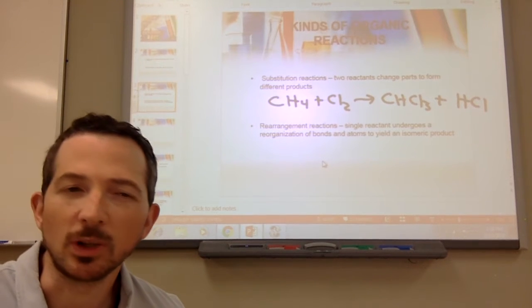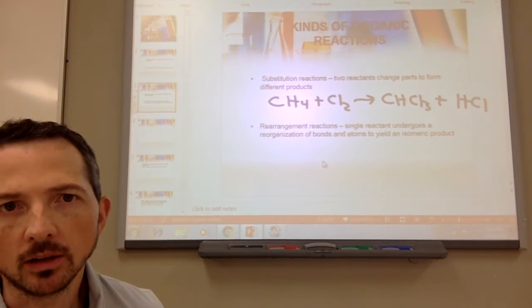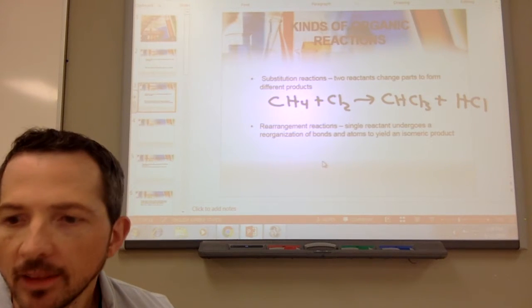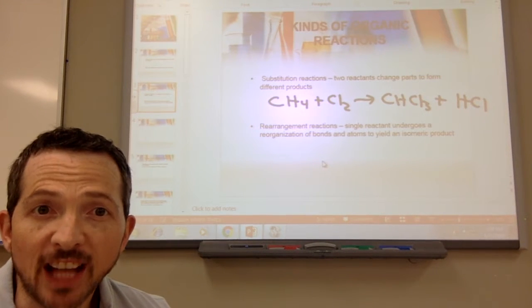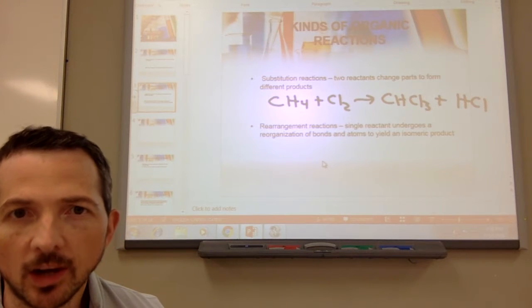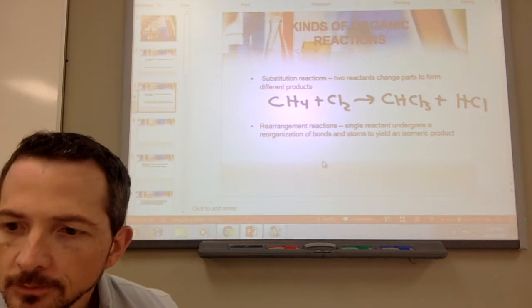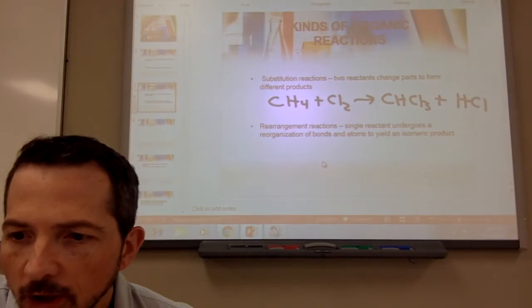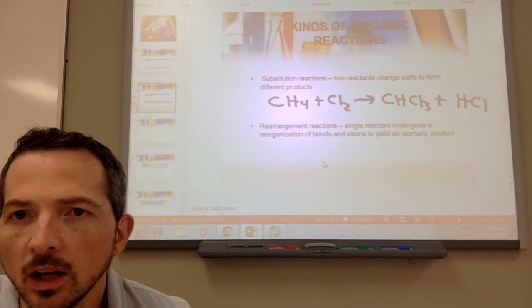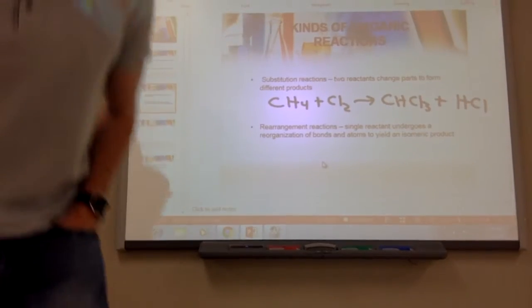In organic chemistry we look at it as something substituting in place of another atom. The last type of reaction we'll see in organic chemistry is a rearrangement reaction, and this one we don't see as often. In a rearrangement reaction, a single reactant undergoes a reorganization of bonds to yield an isomeric product.